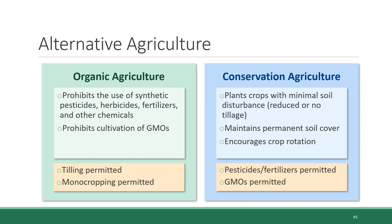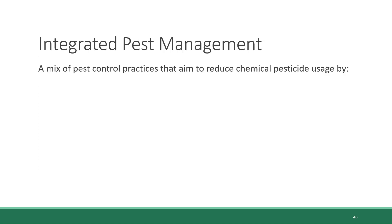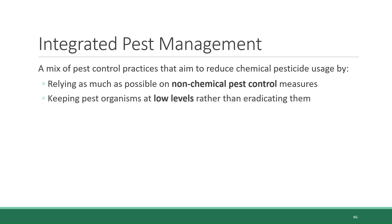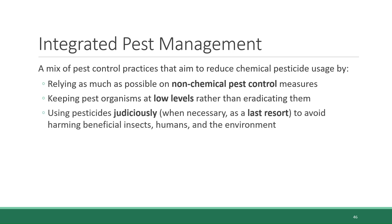Next, we're going to take a look at some of the specific practices that might be a part of one or the other of these alternative agriculture approaches. One of these is called integrated pest management. The goal of integrated pest management is to reduce the use of chemical pesticides by relying as much as possible on non-chemical pest control measures, keeping pest organisms at low levels that don't cause too much damage rather than aiming to totally eradicate them, and using pesticides judiciously when necessary as a last resort in a way that avoids harming beneficial insects, humans, and the environment.